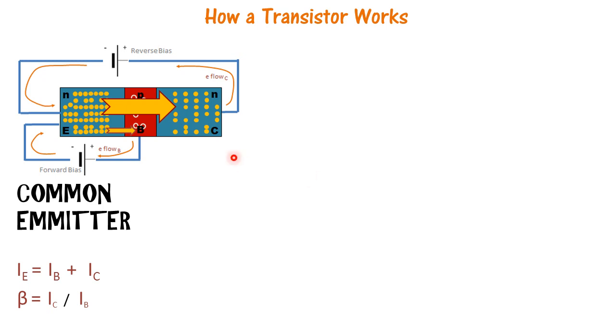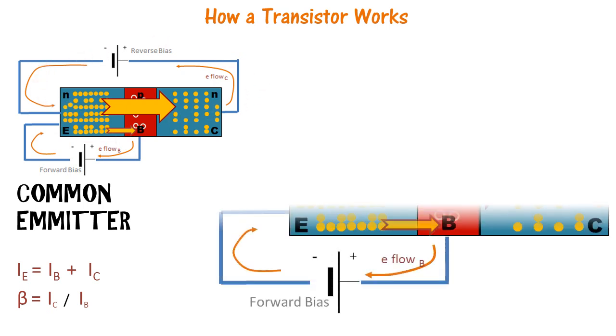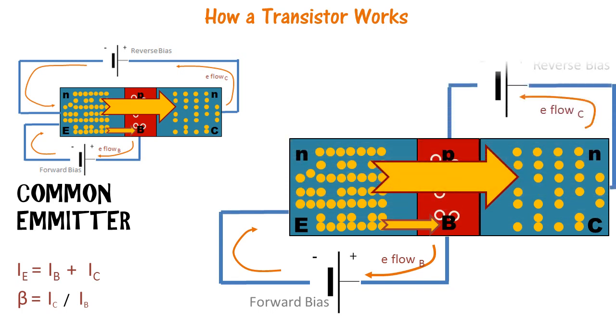We call this a common emitter circuit because the base is connected to the emitter and the collector is also connected to the emitter. We could similarly have a common base circuit configuration.